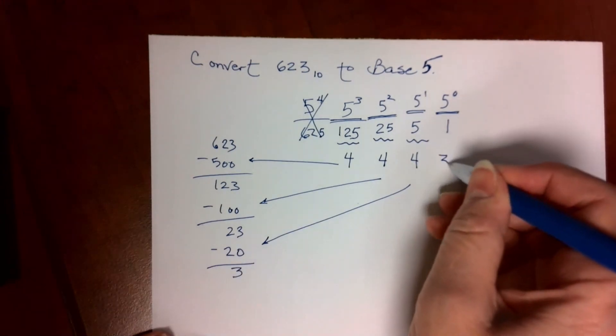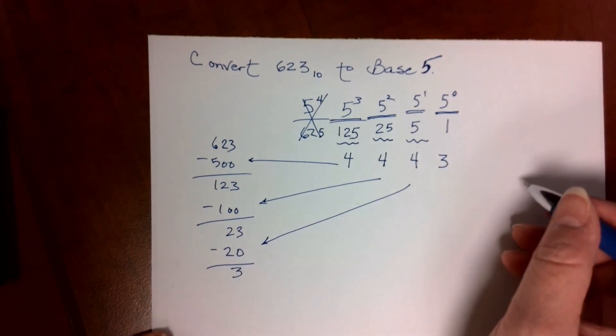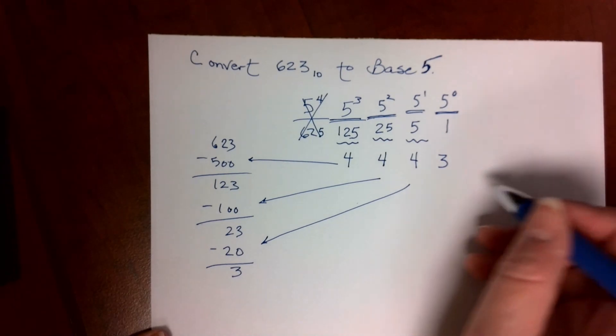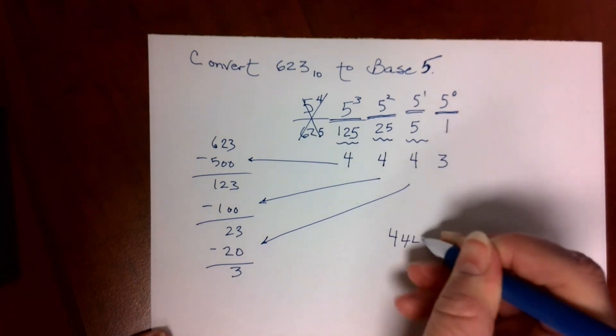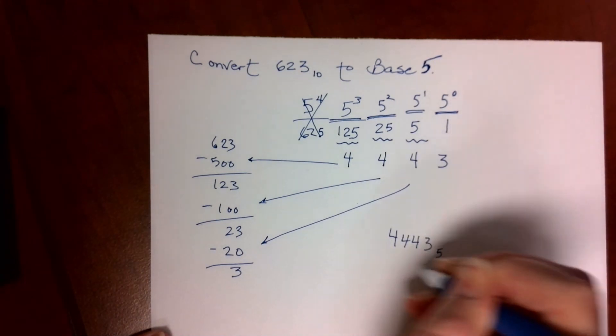That leaves 3 1s left. 3 in the 1s column. My answer is right here looking at us. 4, 4, 4, 3 base 5.